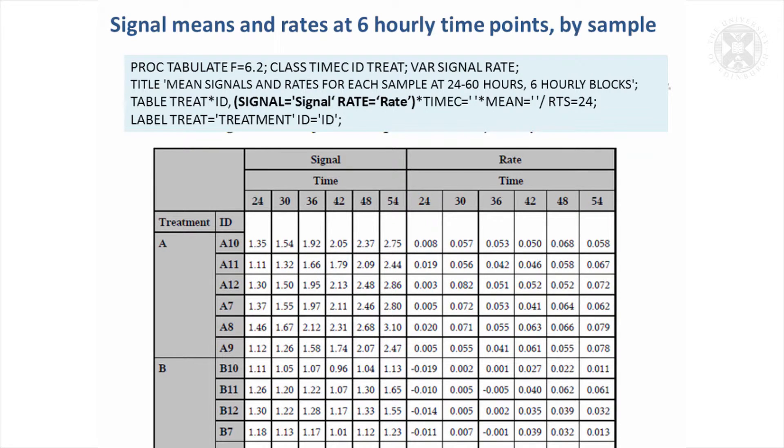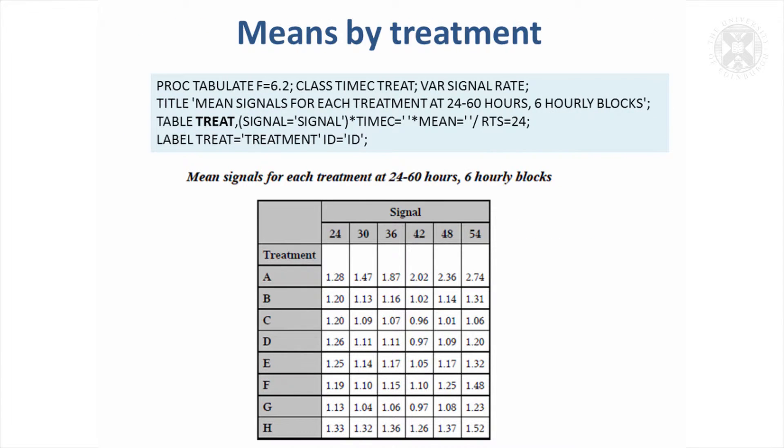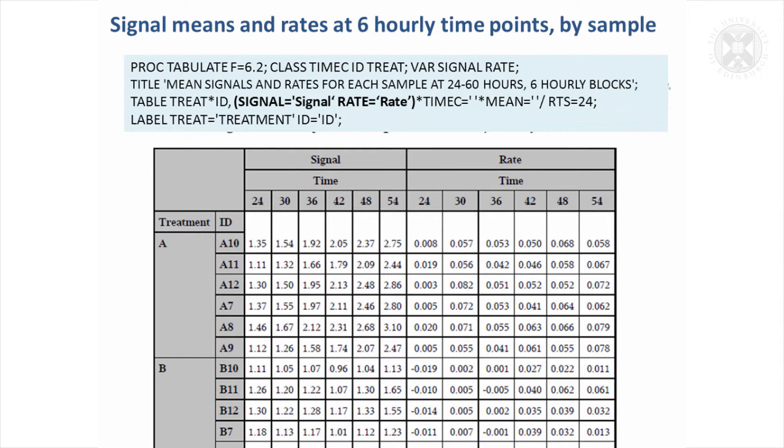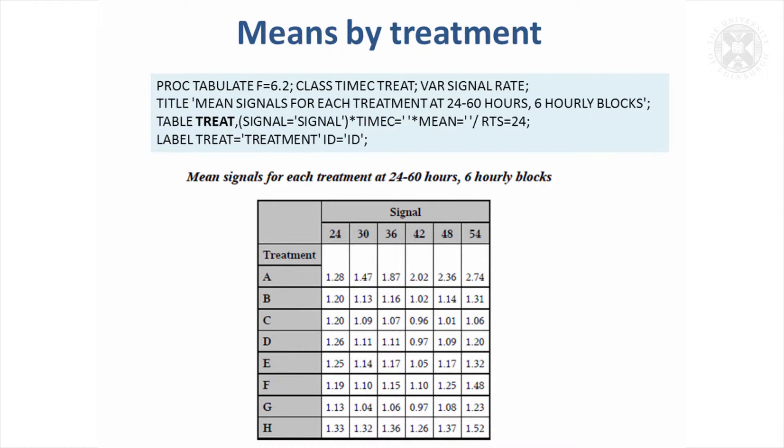We can also add in a second variable to summarize, so the table's now quite busy but we can easily do that in SAS. Whereas before, our means were for each of the sample IDs, we could just summarize them across all the IDs for the treatments and end up with that.